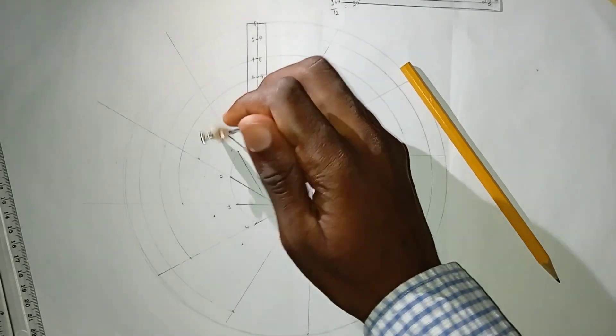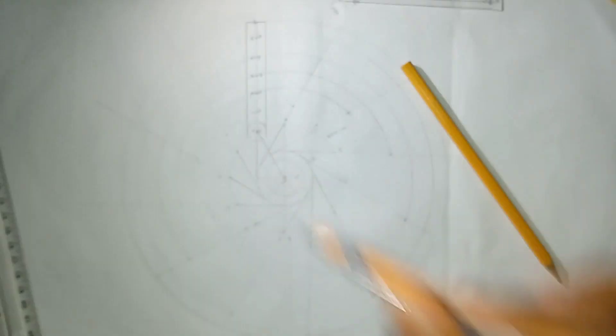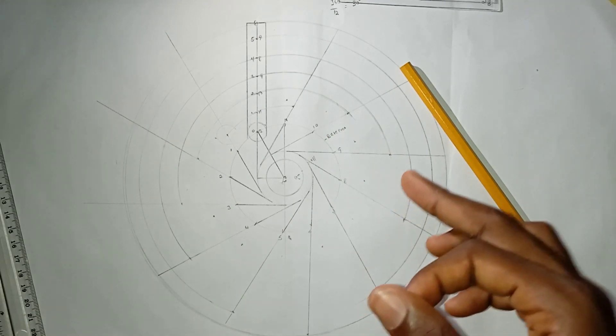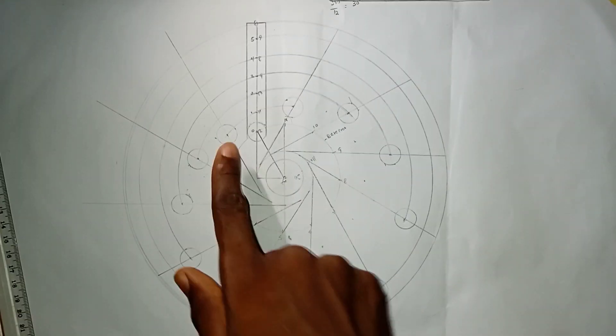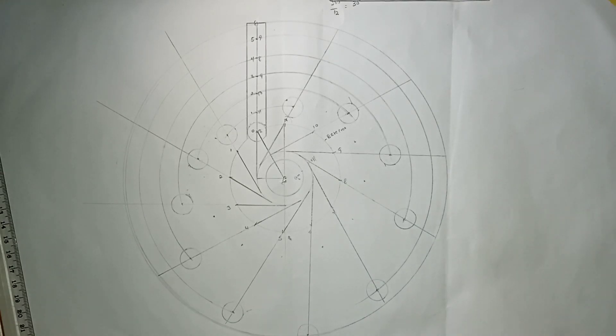After marking these points, now with the same radius of our roller, on all these points I will draw the same circle. I will repeat this process for all the points I just marked. So I drew the circle for all these points.